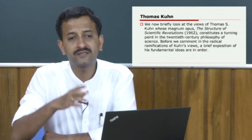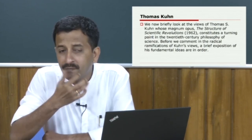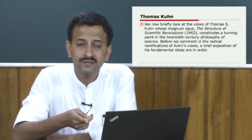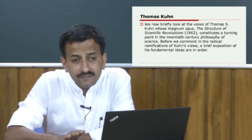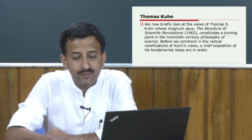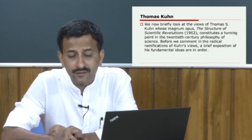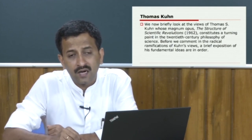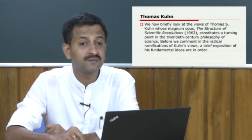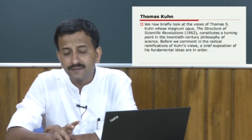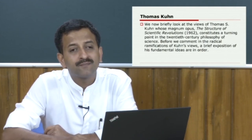Popper's view is that science must start with a problem, a research question. Science must be able to identify a problem. From that problem, we must try to formulate a hypothesis — a tentative solution to a problem or hunch. From the formulation of the hypothesis, it must be tested. If a hypothesis is tested wrong, it must be rejected; if tested right, it must be accepted. But for Popper, a hypothesis must be falsified.